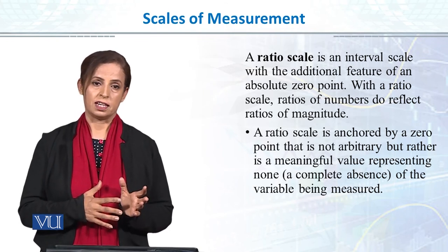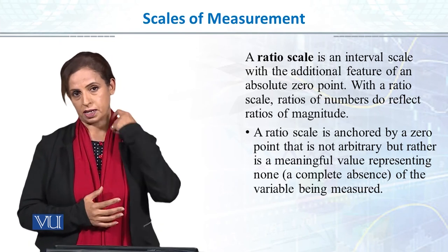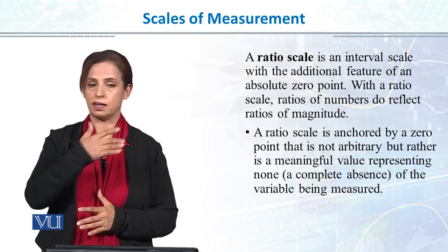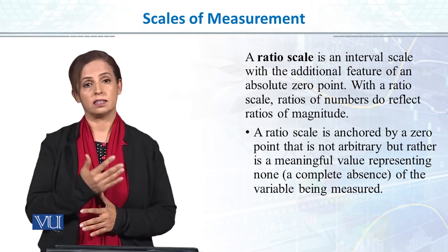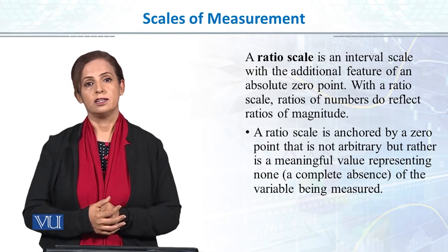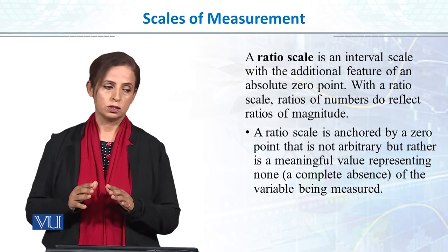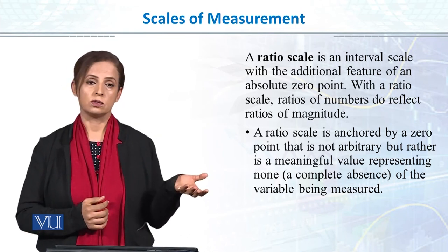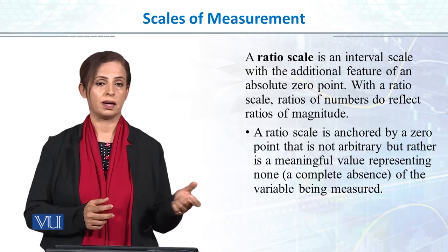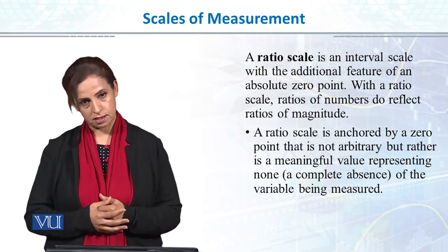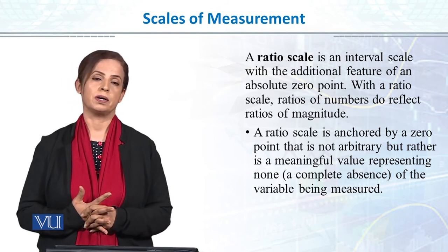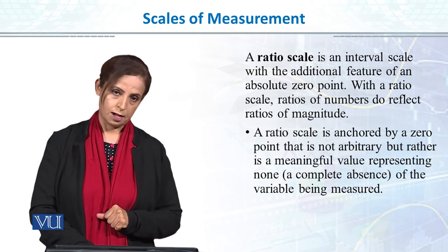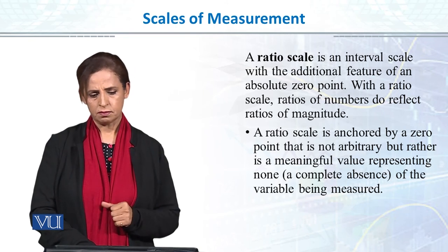The fourth and most refined level of measurement is ratio scale, which has completely and purely quantitative properties. Ratio scale has all the properties of interval scale — equal intervals between numbers, continuous scale, purely quantitative — but it also has a true zero point. True zero means zero actually means zero. In pure sciences like physics and chemistry, we use ratio scale: for example, zero height truly means zero height, and zero weight means the thing has zero weight. So in pure sciences we measure things on ratio scale because it has pure quantitative numbers and a true zero point — not arbitrary.